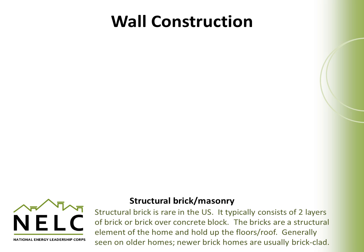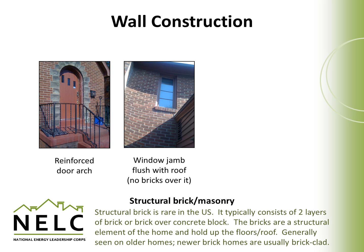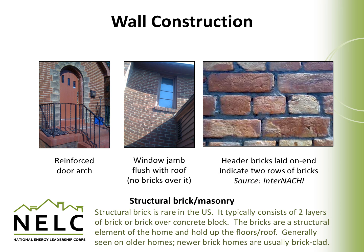Structural brick masonry is fairly rare in the United States. It usually consists of two layers of brick over concrete block. Typically when you look at a brick surface it's only a veneer and not a structural member, but with structural brick the brick is actually carrying the weight of the walls and the roof above. This is generally only seen in older homes, as newer brick homes are usually just clad with brick. Some ways to detect structural brick include the use of arches over top of doorways, windows pushed all the way to the top of the wall to eliminate the need for a spanning member, and the use of header rows, in which every five or six courses of brick there's a row of bricks laid on edge to tie two courses of structural brick together.